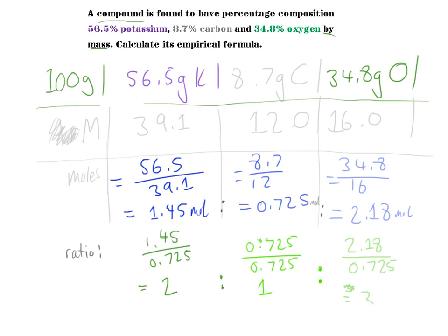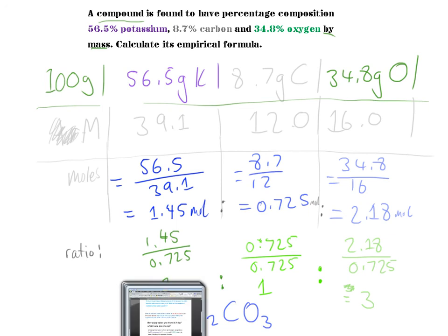Since those are whole numbers, the empirical formula based on this ratio is K₂CO₃. That is the empirical formula of the compound.